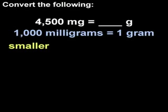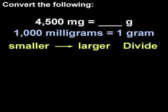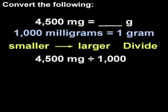Next, notice that we're going from a smaller unit, milligrams, to a larger unit, grams, so we divide. So we have 4,500 mg divided by 1,000.